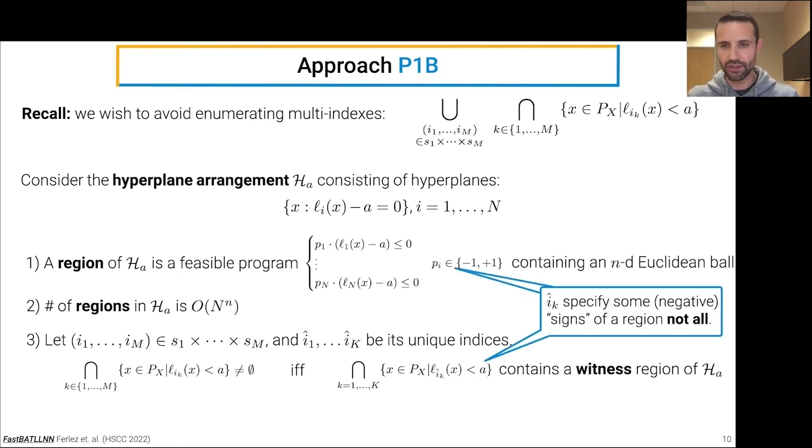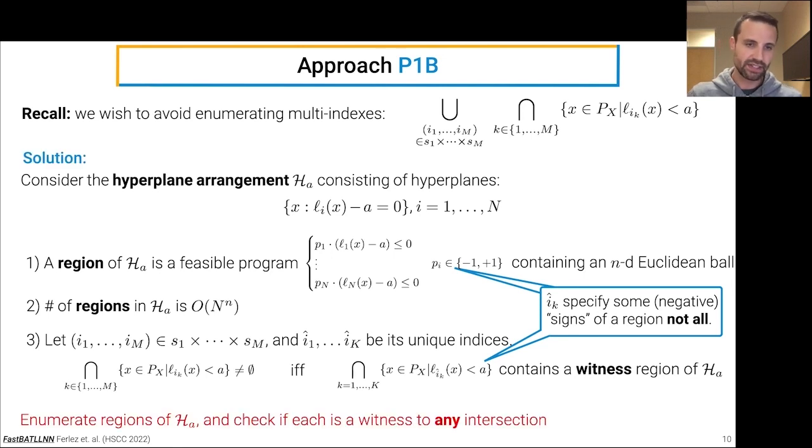So intuitively, you can think about this as the multi-index specifies some, but not all of the negative signs in a legitimate region, if that region is not empty. So what we can do is simply enumerate all the regions in this hyperplane arrangement, of which there are only polynomially many, and check to see if each is a witness to any one of the intersection terms in the set we care about. So if we find a witness region, then we have witnessed the violation, we can return unsat, but if we exhaust all of the regions without finding any violation, then we can return sat.